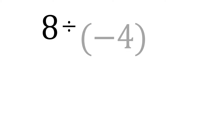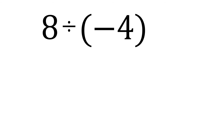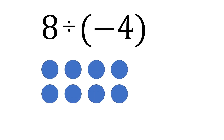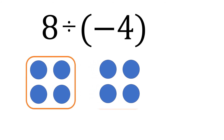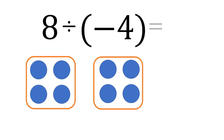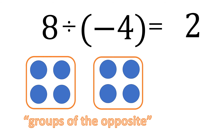Another example: positive 8 divided by negative 4. Let's visualize positive 8 with 8 positives, then group them by 4. We have the first group and the second group — 2 groups. So 8 divided by negative 4 is 2, but again, this is a group of the opposite. Instead of 4 negatives, it is a group of 4 positives. So it is not the group we are looking for, and we put a negative sign on the quotient.